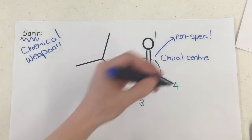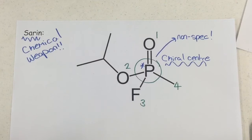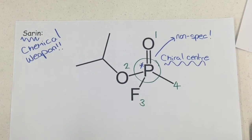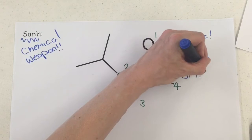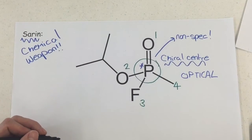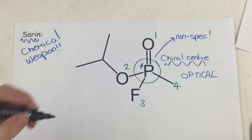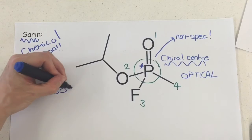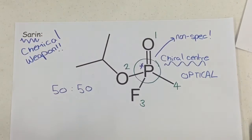Now since it's a chiral centre, that means it's going to demonstrate a type of stereo isomerism called optical isomerism, which means it's going to have a non-superimposable mirror image of itself. Now sometimes what that means is when we do a reaction we get a 50-50 mixture of each of the optical isomers.